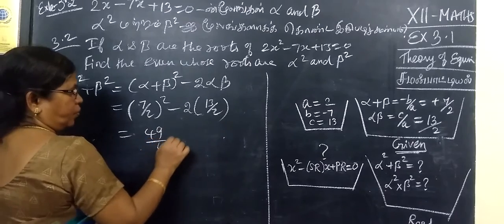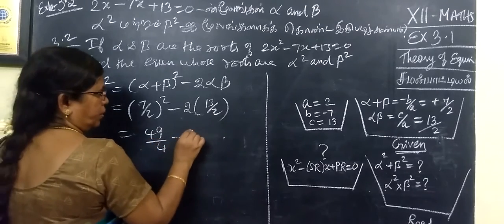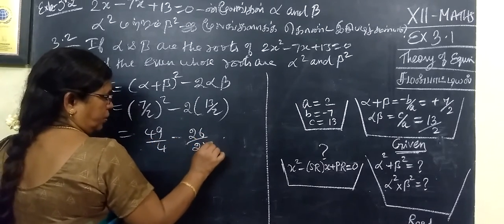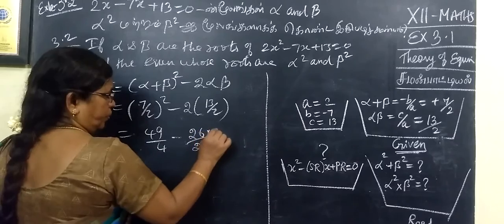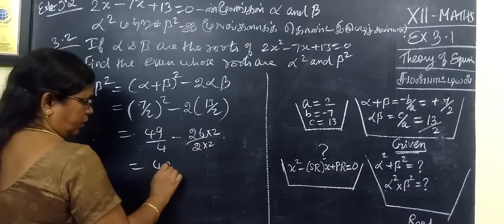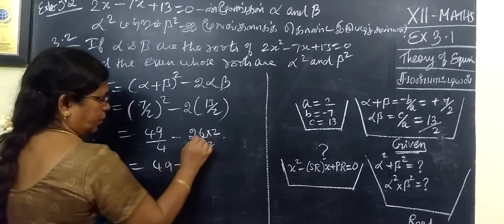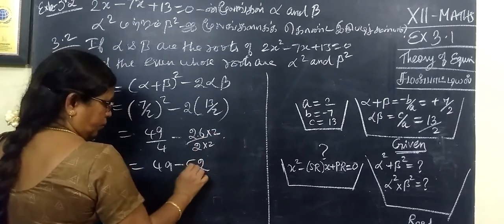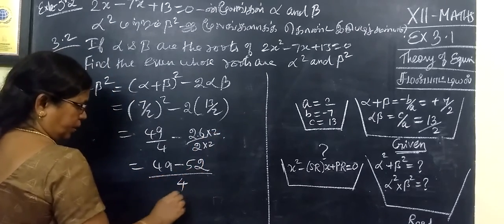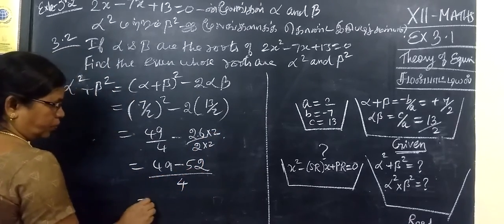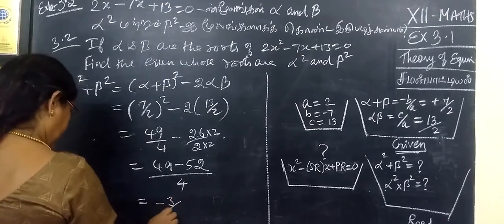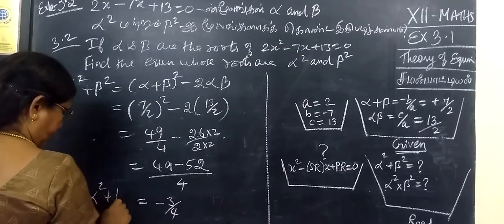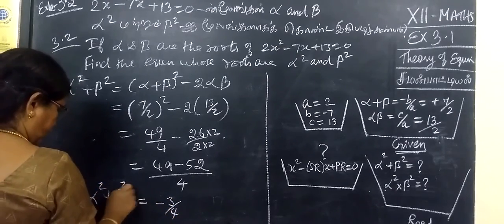4 by 4 minus 26 by 2 — making it 2 into 2 — gives 49 minus 52 over 4, which equals minus 3 by 4. This is the sum of the new roots.